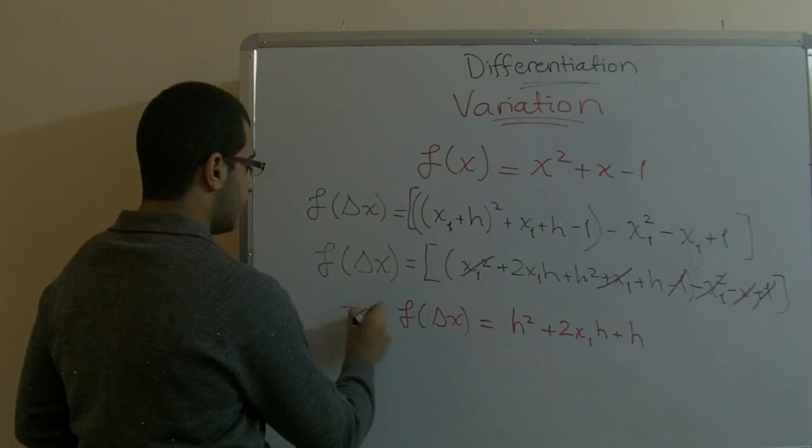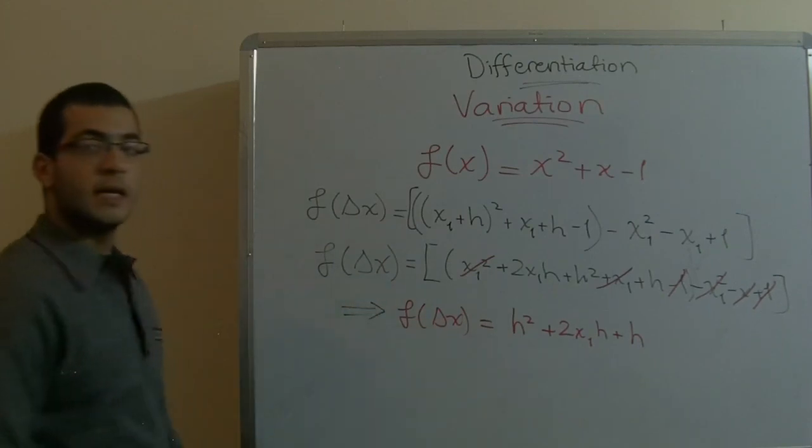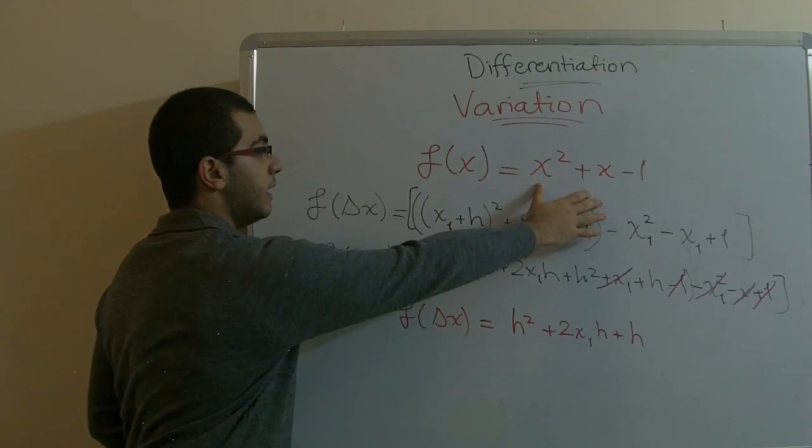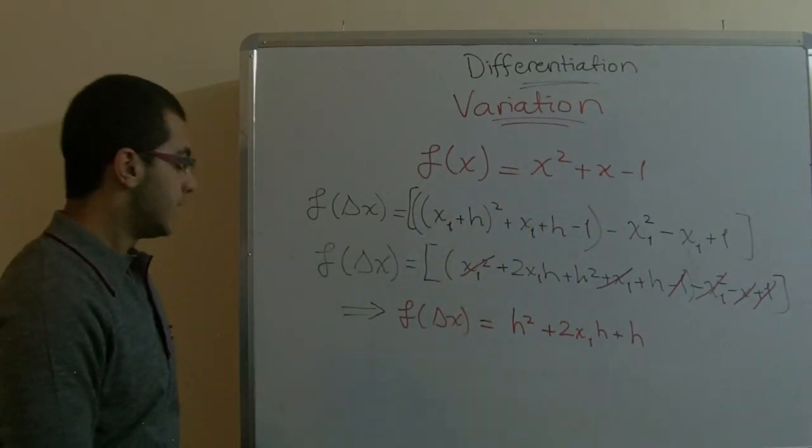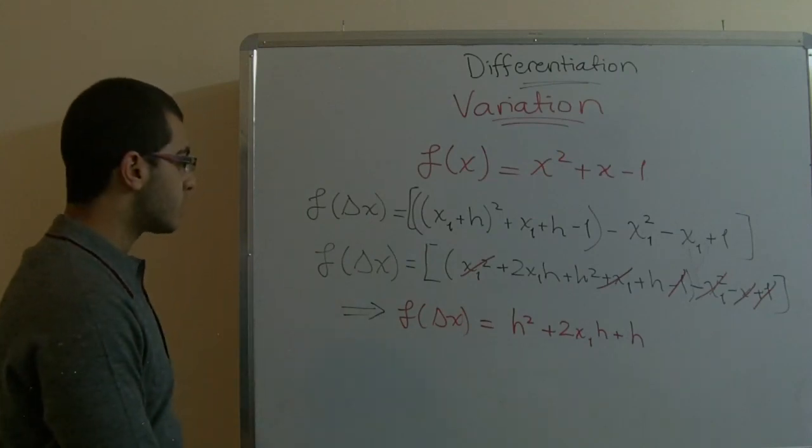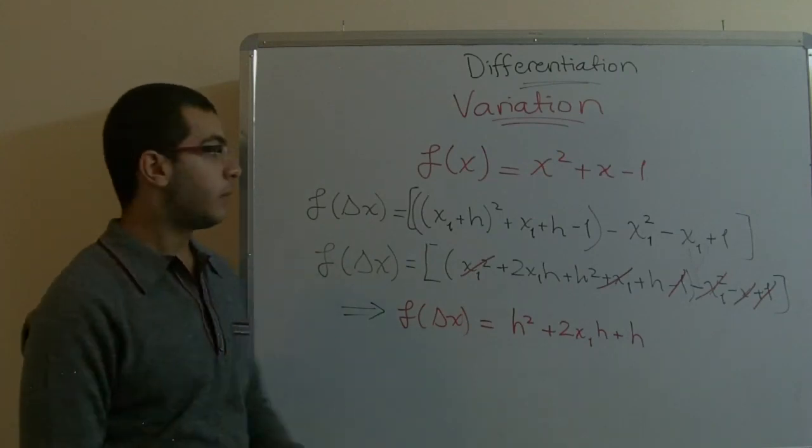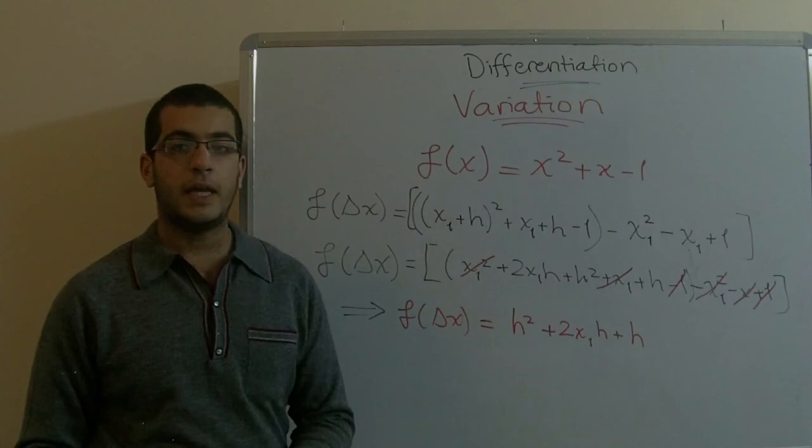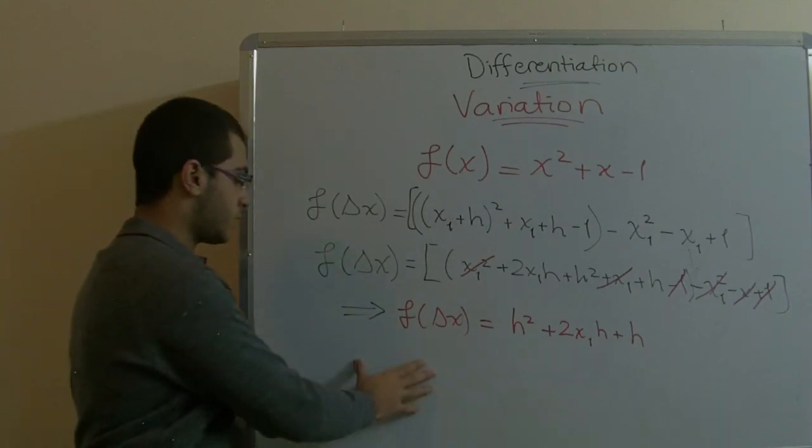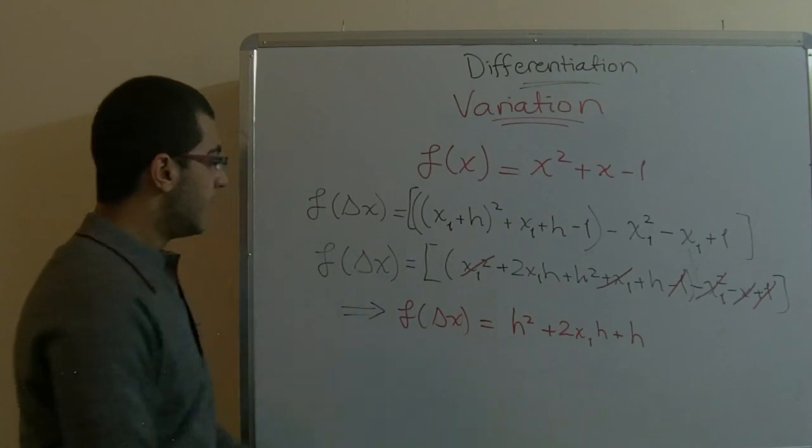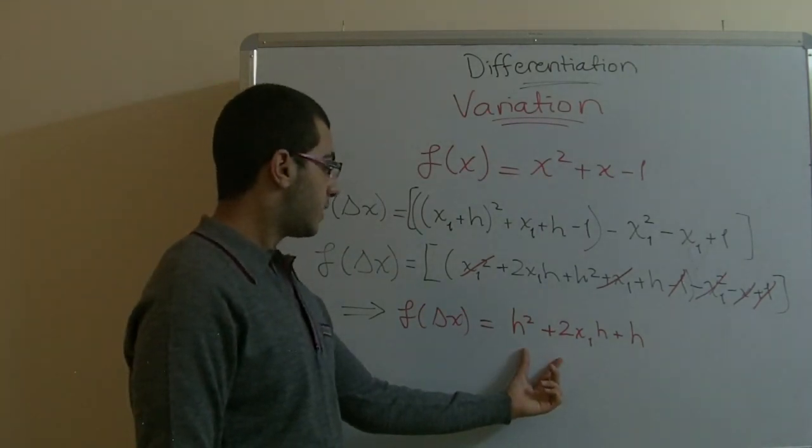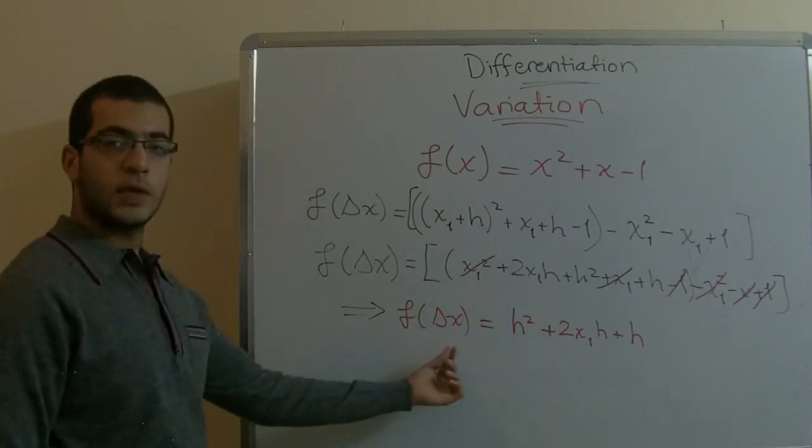So this is the variable function of f(x) equals x to power 2 plus x negative 1. This is the function that we use if we want to get a variable. If we have two values of x, x2 and x1, this is the function which illustrates this value.